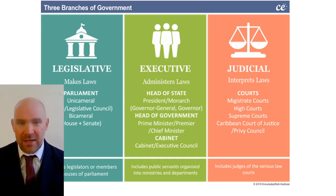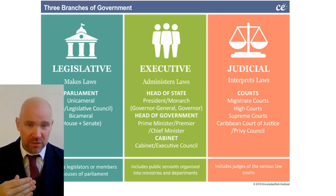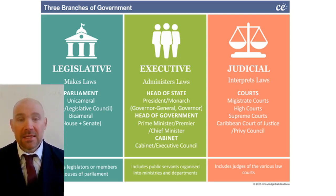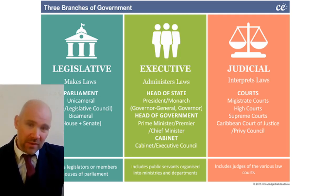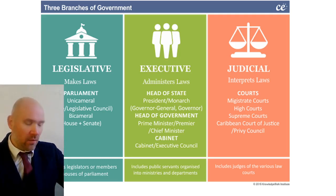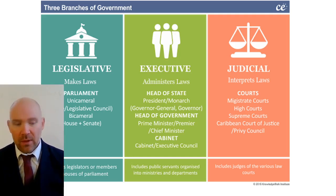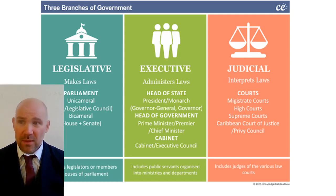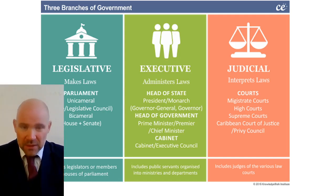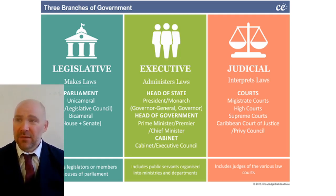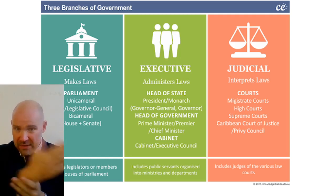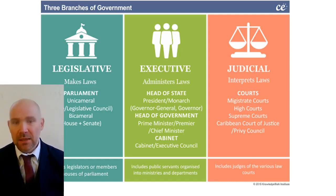The slightly more complex one is the executive, because it changes a little bit from country to country. The simple version is that they administer laws — they carry them out. So the legislature makes a law saying the speed limit is 60 miles per hour, and the executive carries that out — instructs the police, makes sure speed cameras catch people. If the legislature raises taxes, it is the executive that will enforce that tax raise and collect that money.